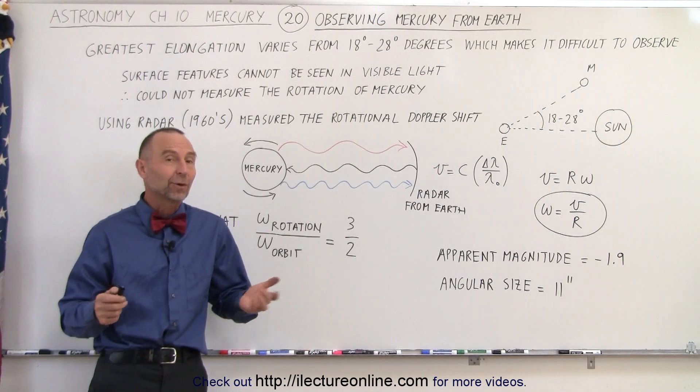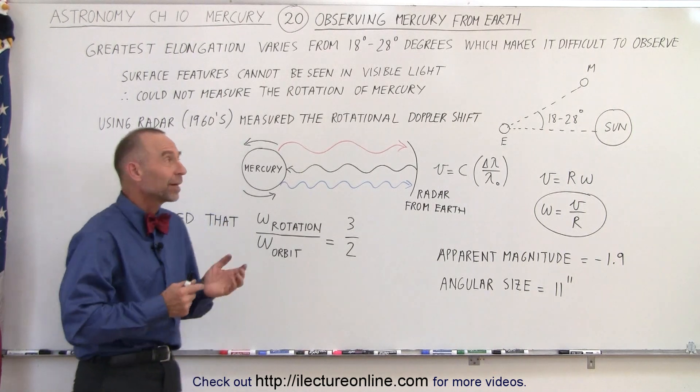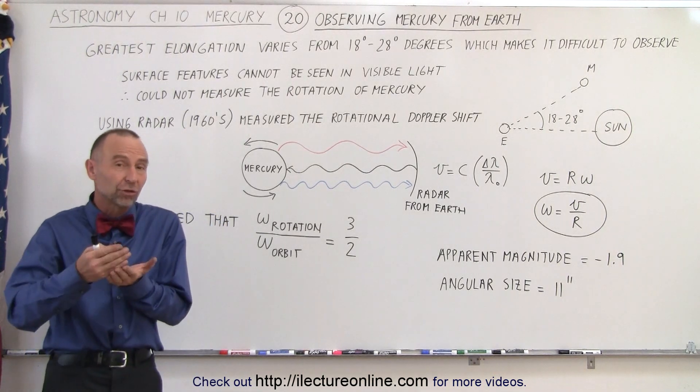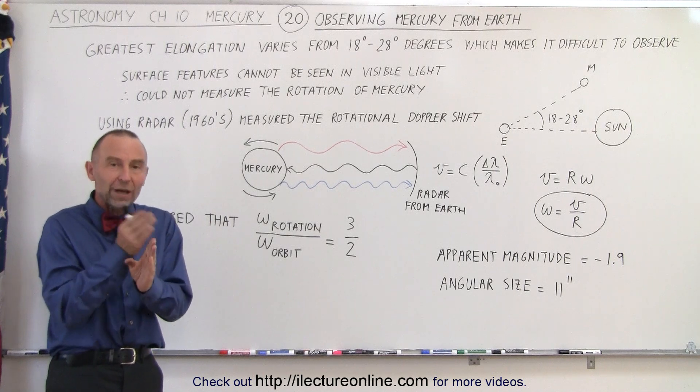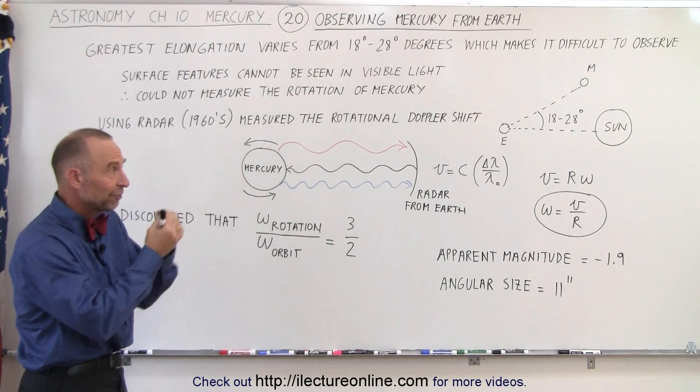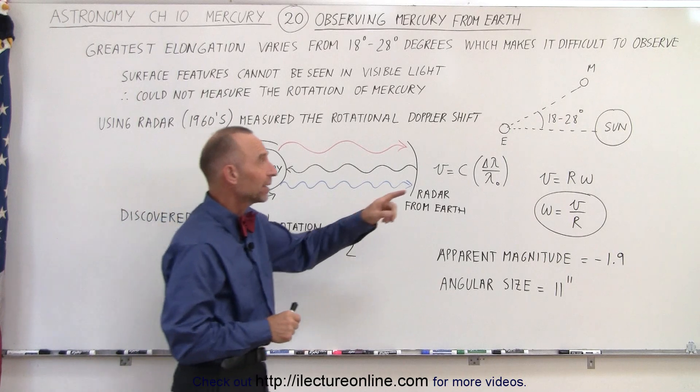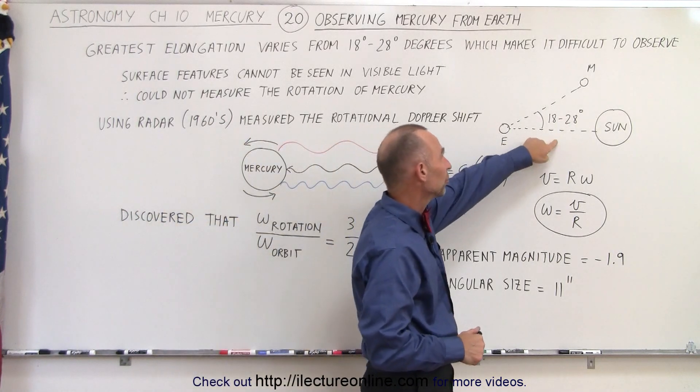Well, it turns out there wasn't a lot we could see from Mercury because it's much closer to the Sun and the distance away from the Sun is never very large when we have the vantage point from the Earth. Matter of fact, the maximum elongation,